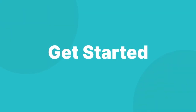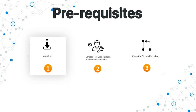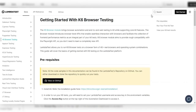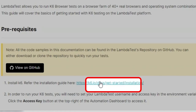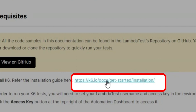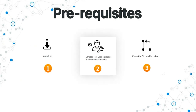Now that we have touched upon K6 and its core features, let's go ahead to perform web automation using K6 on LambdaTest. To get started, install K6 on your local machine. You can find the link to the installation guide from the official documentation. To execute tests on LambdaTest, you will need to set your LambdaTest username and access key in the environment variables.